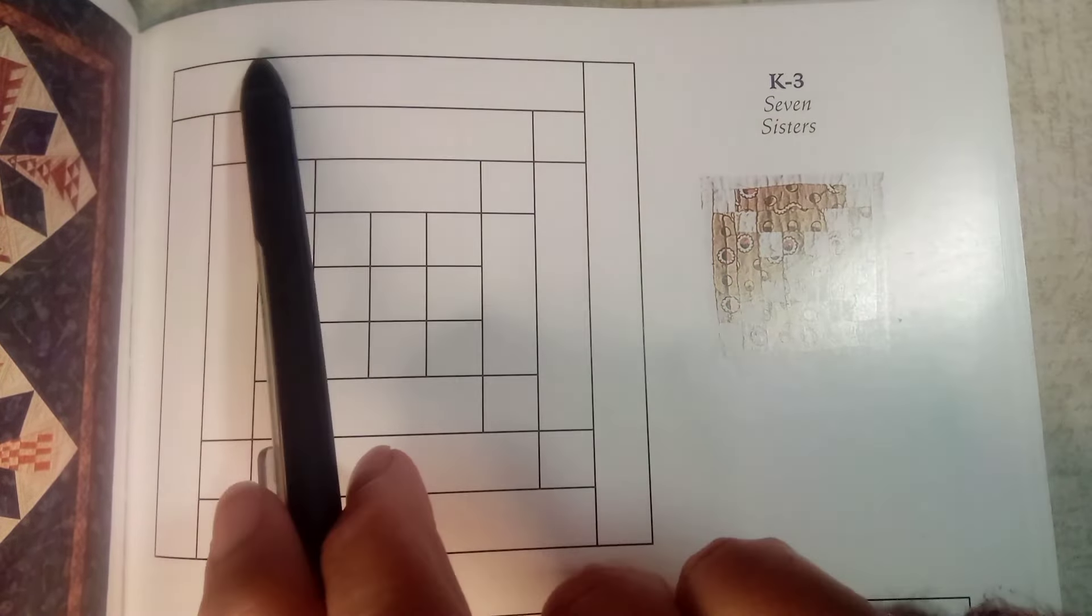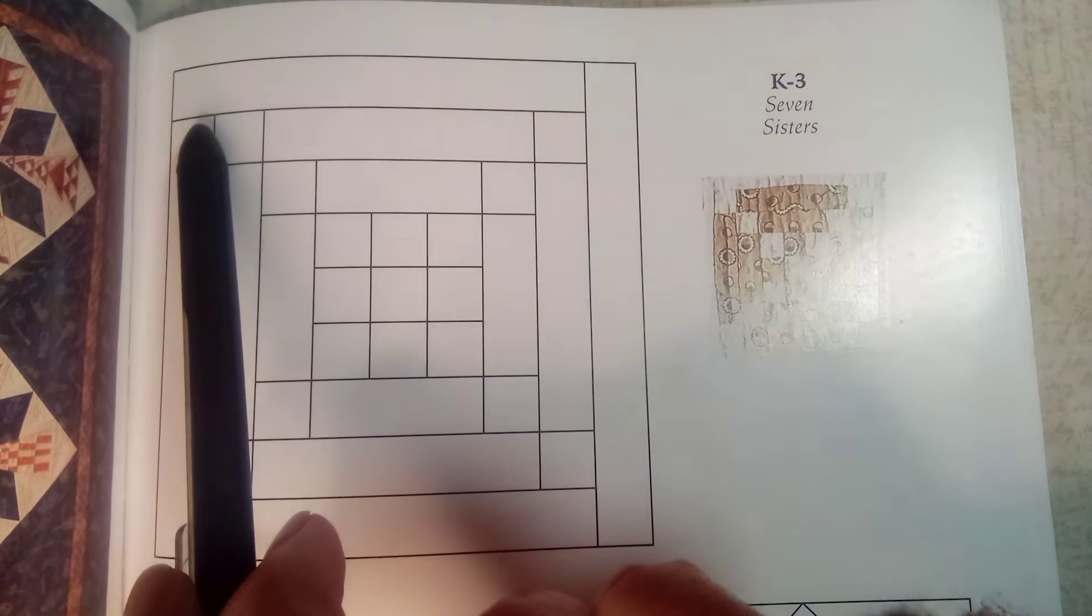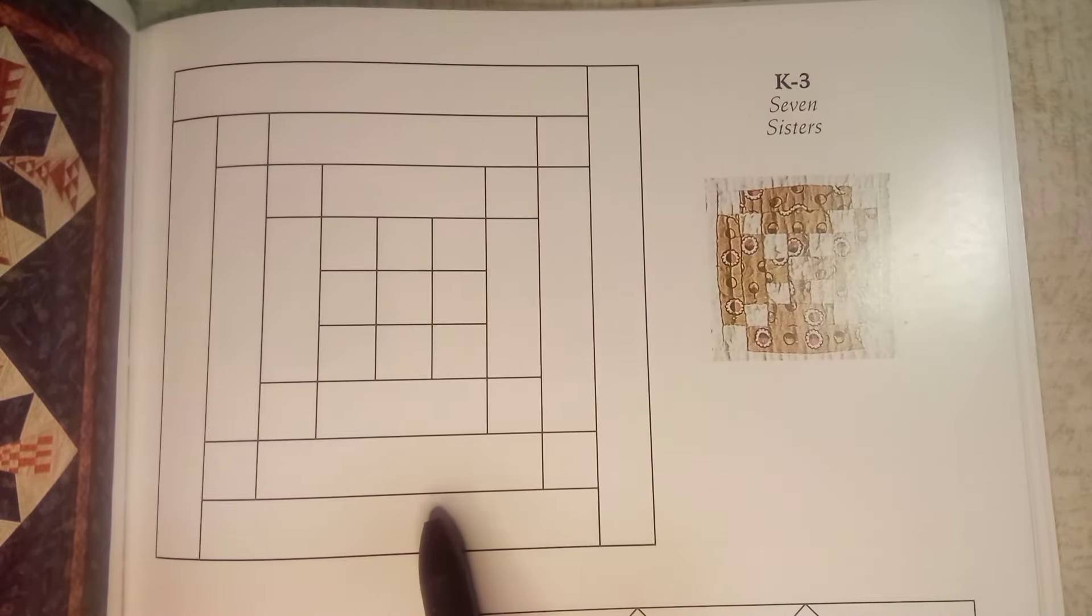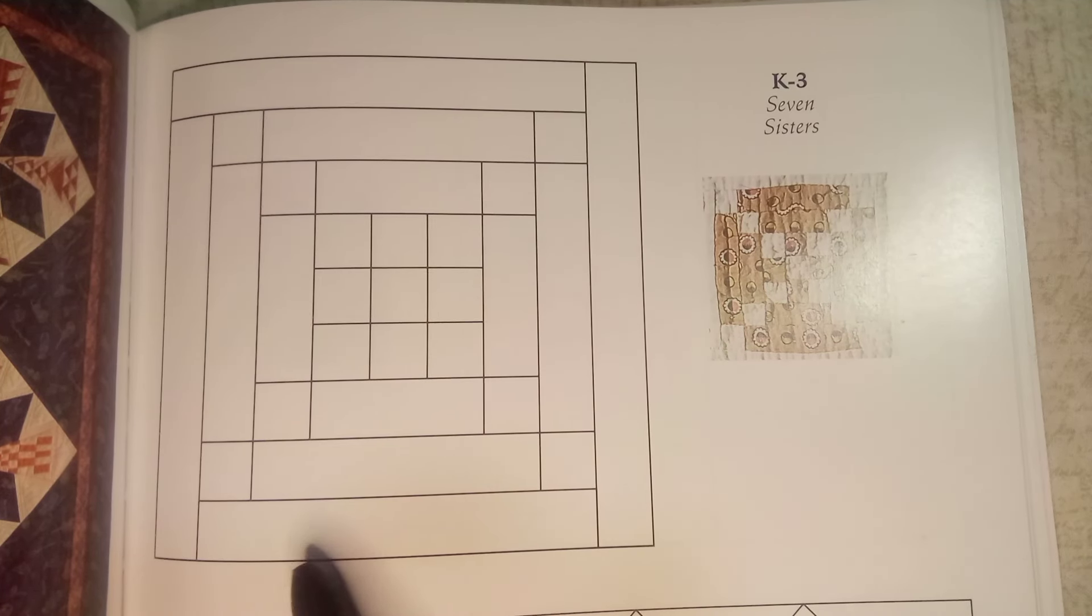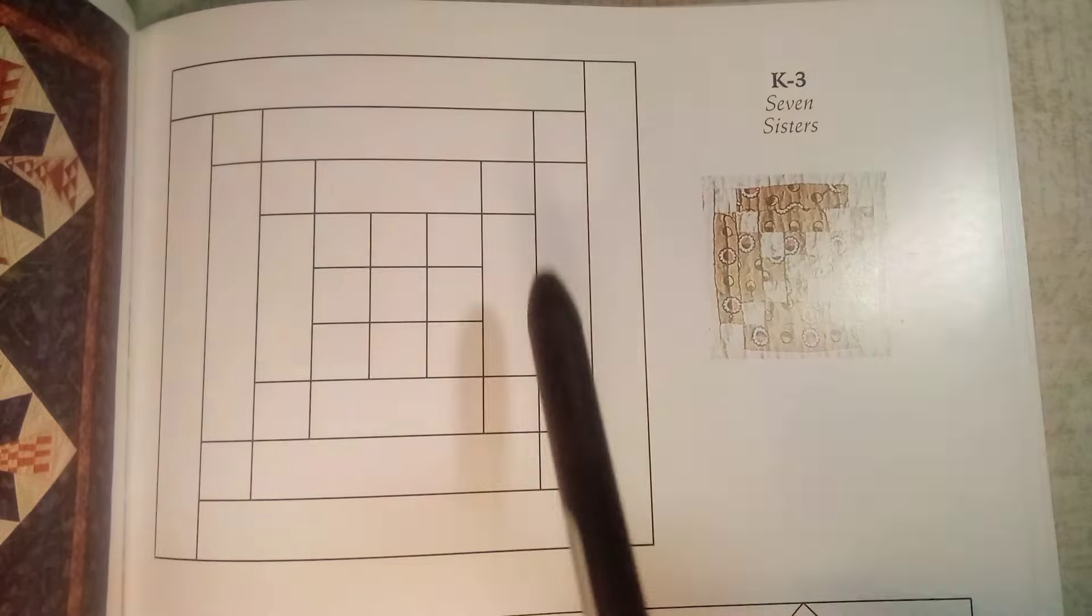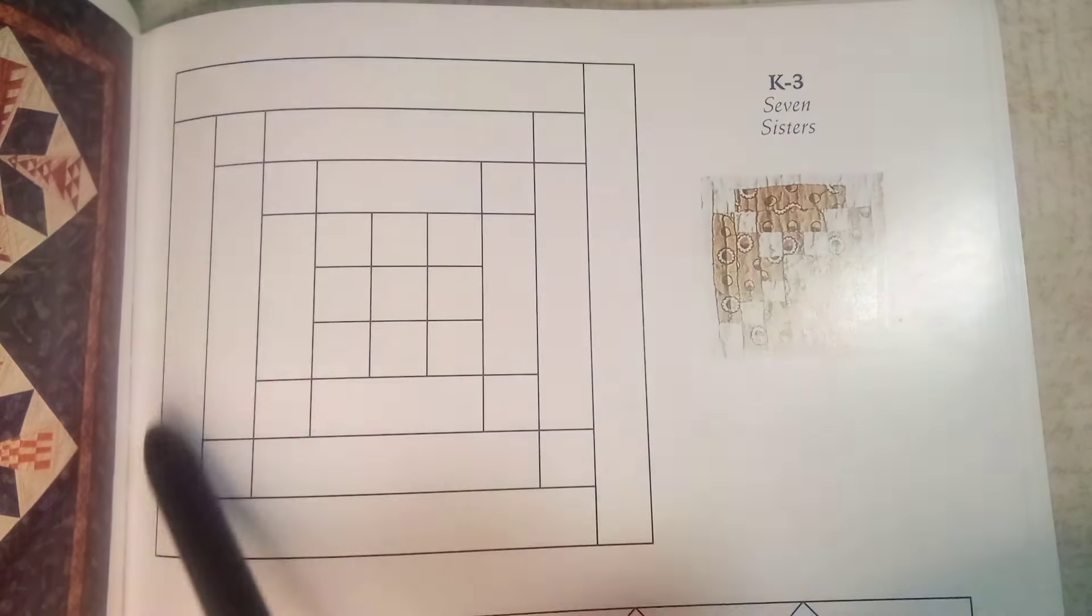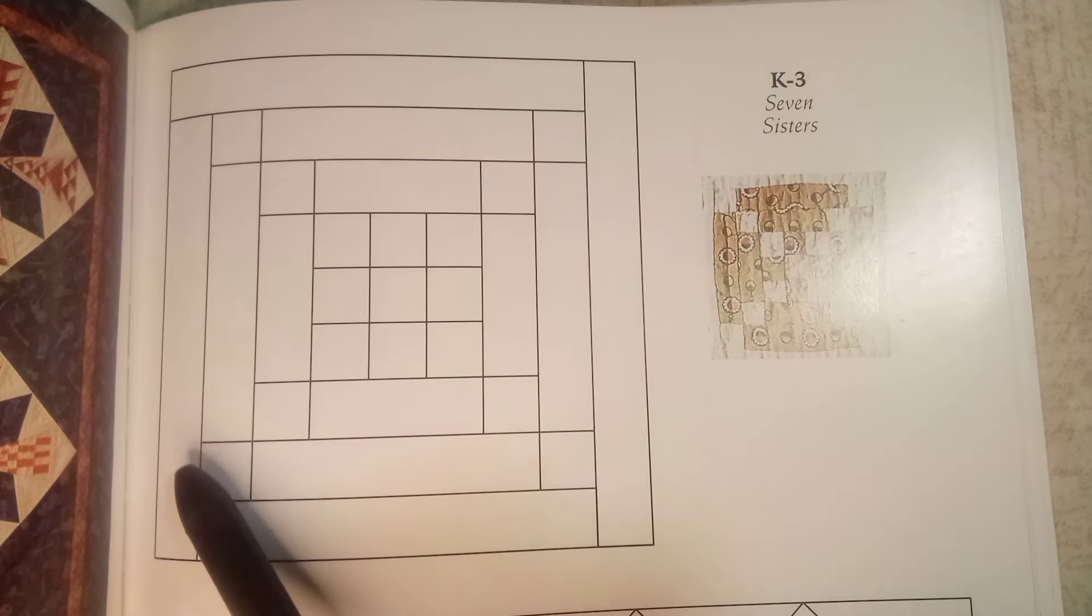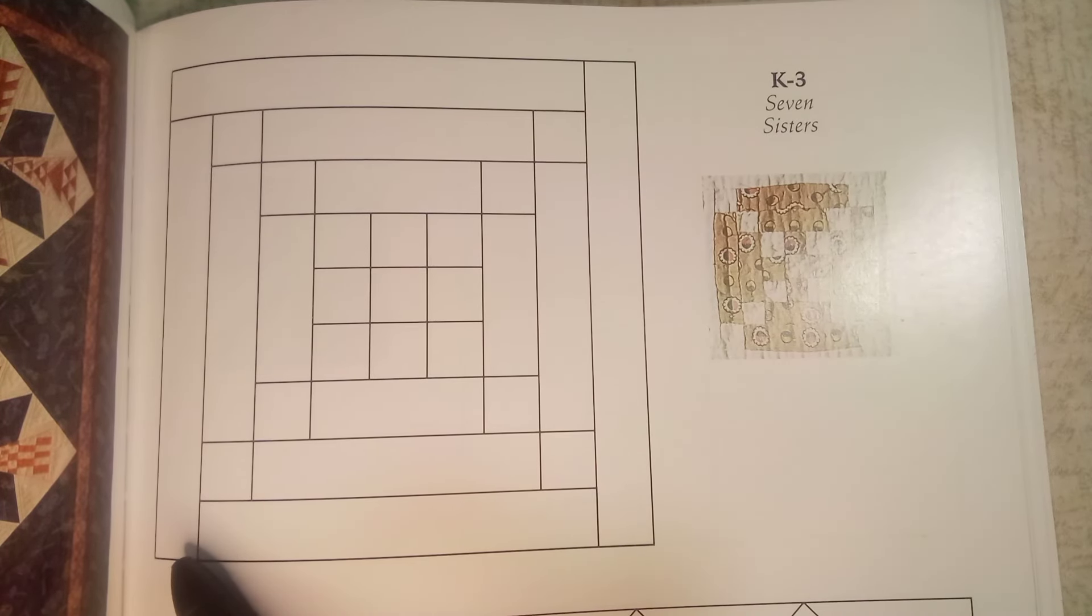So this rectangle and this one, which will stop just here, they will both be three and a half inches. So we're gonna cut those at four inches by one. And then these side ones, they'll be the full length of the block, so those will need to be four and a half inches. So we're gonna cut them at five inches by one.